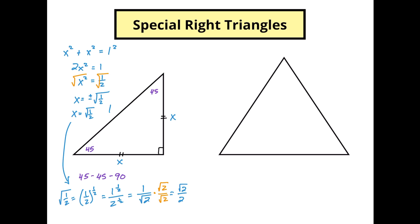So for a 45-45-90 triangle, these two sides are both equal to √2/2 and the hypotenuse is going to be a value of one. So here are our values for a 45-45-90 triangle. That's important because when we take this and apply it to the unit circle, you're going to see where those values go and what they mean.